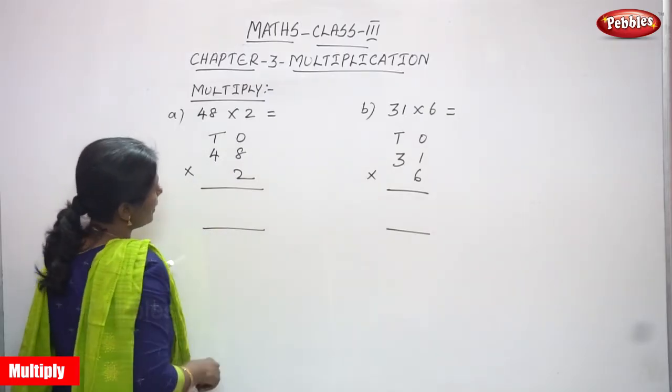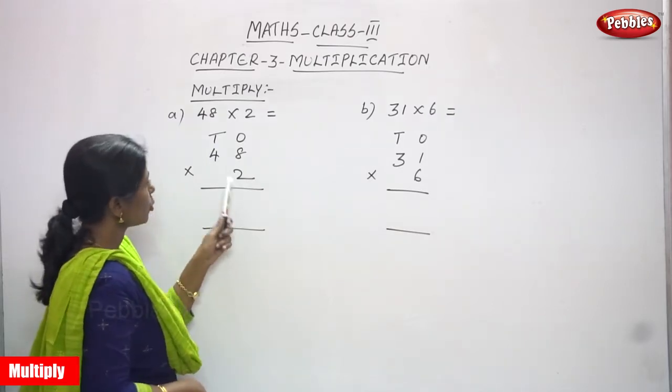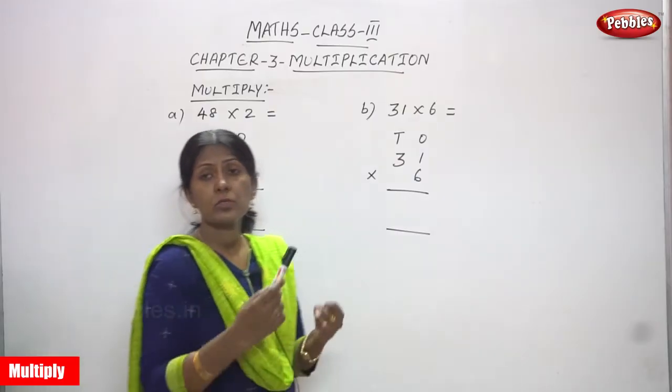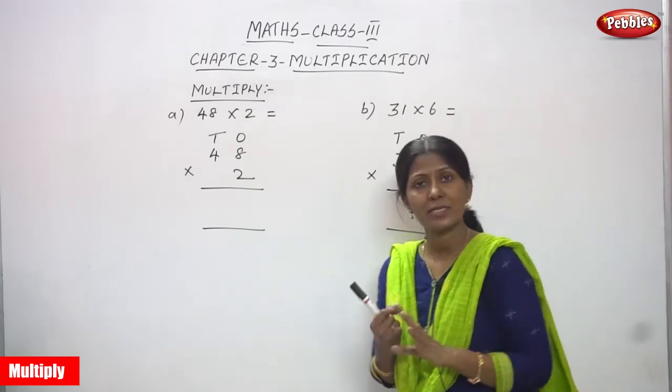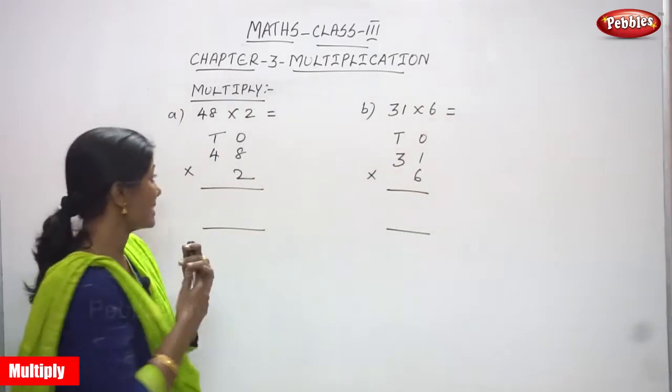First I am going to multiply by ones. Next I am going to multiply by tens. So 2 eights are. First you have to see the two table. So 2 ones are 2, 2 twos are 4, 2 threes are 6, 2 fours are 8, 2 fives are 10, 2 sixes are 12, 2 sevens are 14, 2 eights are 16. So what is the number? 16.